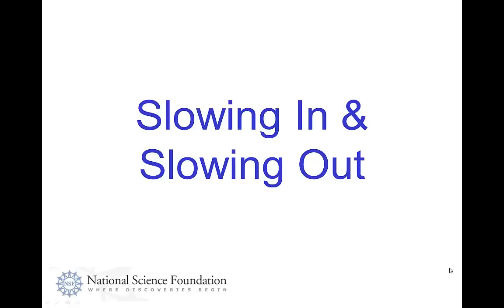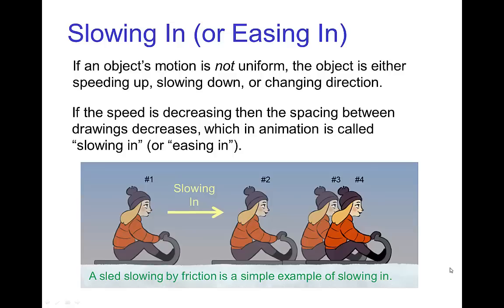Slowing in, or sometimes called easing in, is when you have the motion of something that's not uniform. If it's not uniform, it's speeding up or slowing down or changing direction.